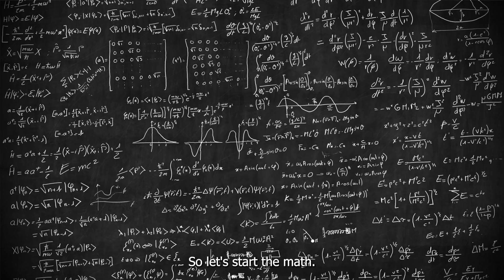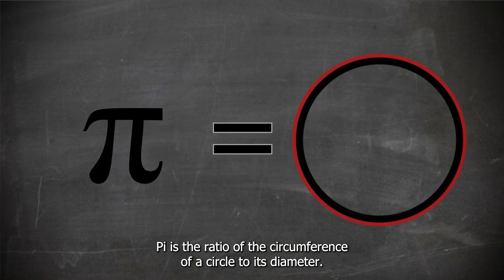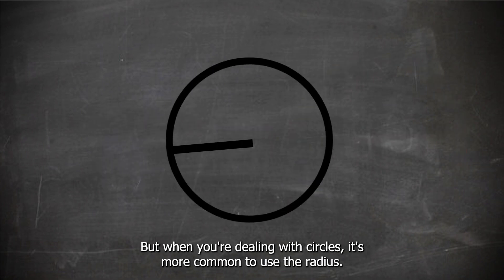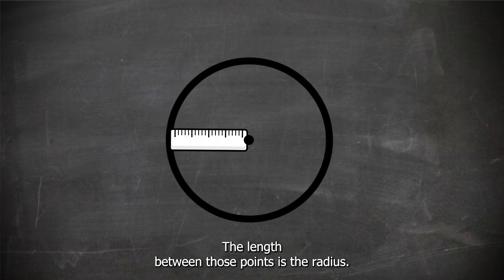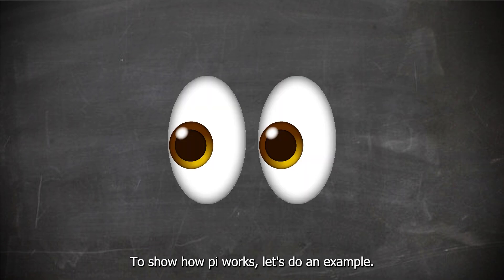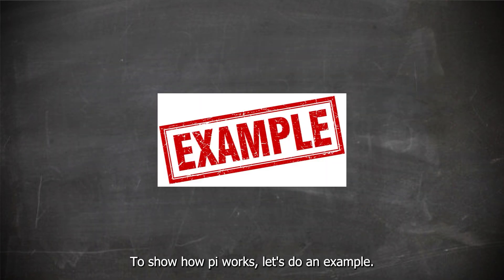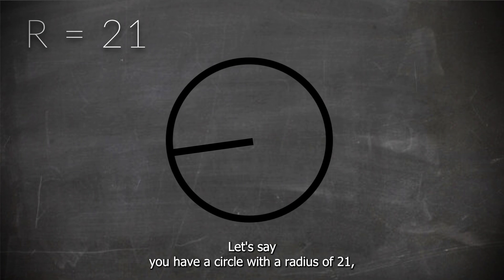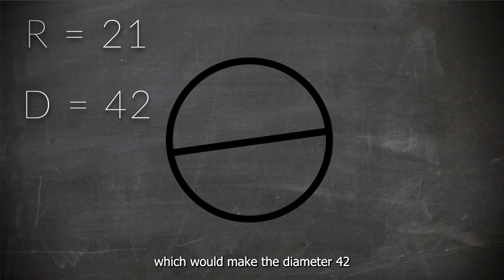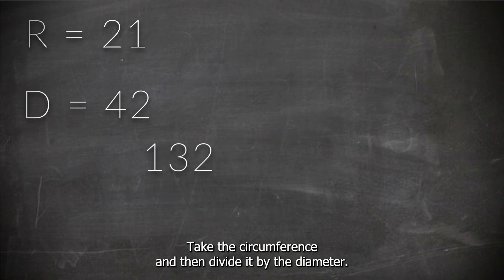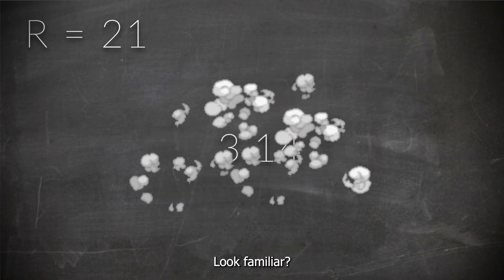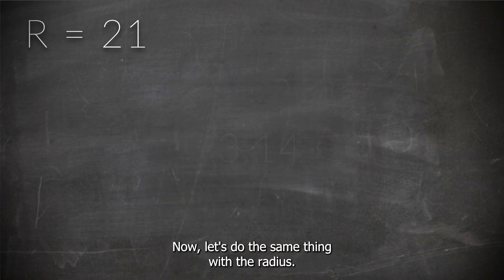So let's start at the math. Pi is the ratio of the circumference of a circle to its diameter. But when you're dealing with circles, it's more common to use the radius, because a circle is literally defined as a set of points equally distant from a center point — the length between those points is the radius. Let's say you have a circle with a radius of 21, which would make the diameter 42 and a circumference of about 132. Take the circumference and divide it by the diameter — look familiar? Now let's do the same thing with the radius. And that right there is Tau.